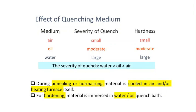For annealing or normalizing heat treatments, cooling is normally done in air or inside the heat treatment furnace itself. For the hardening heat treatment process, we commonly employ either water or oil, which have significantly higher quenching rates.